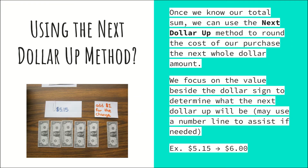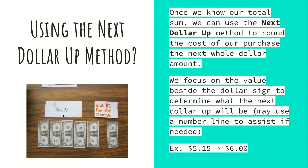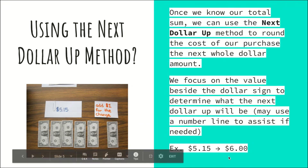Once we know our total by adding with the decimal point to keep track of place value, we can use the next dollar up to find how much we need to pay in totality. We round the cost up to the next whole dollar amount, focusing on the value beside the dollar sign. For example, if the total sum is five dollars and fifteen cents, the next dollar up would be six dollars.